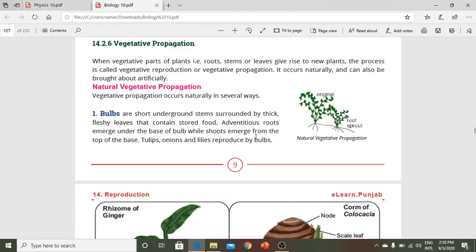Vegetative propagation is when vegetative parts of plants - roots, stems, leaves - give rise to new plants. This process is called vegetative reproduction or vegetative propagation. It happens naturally or can be artificially brought about.